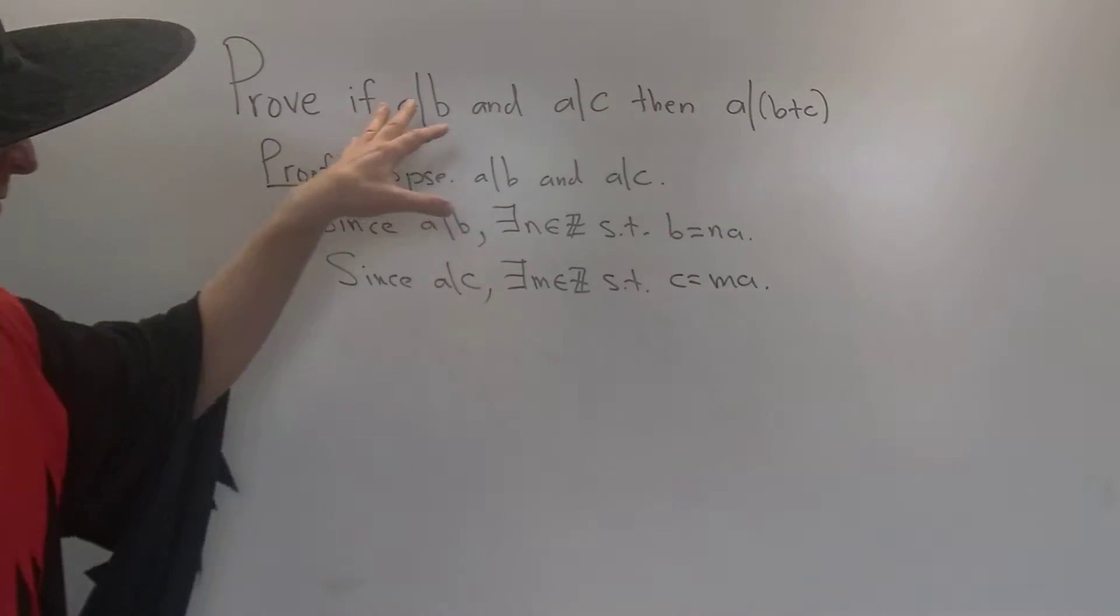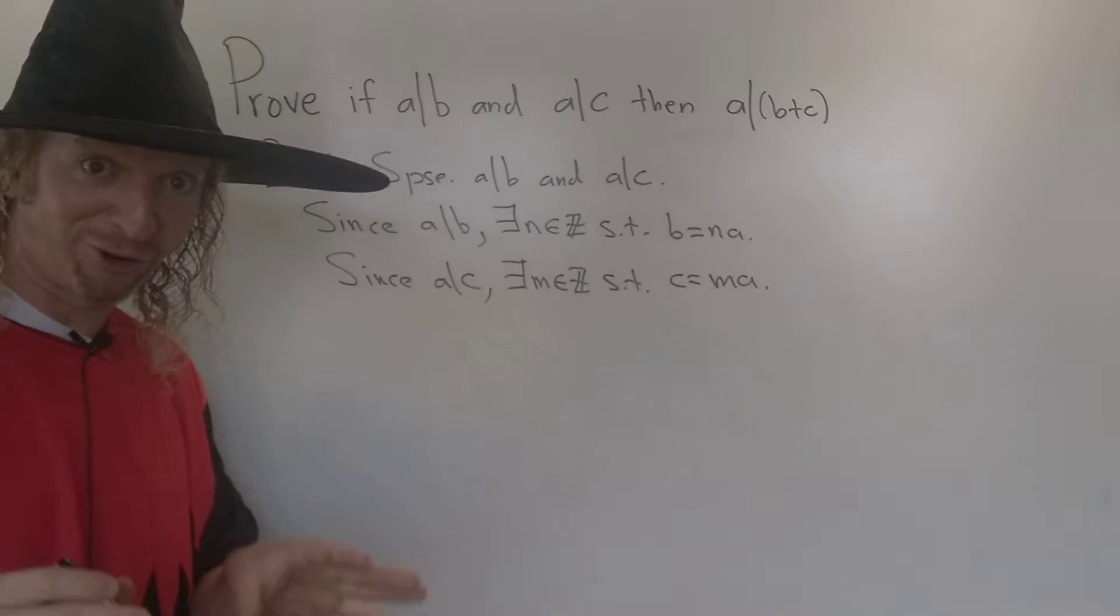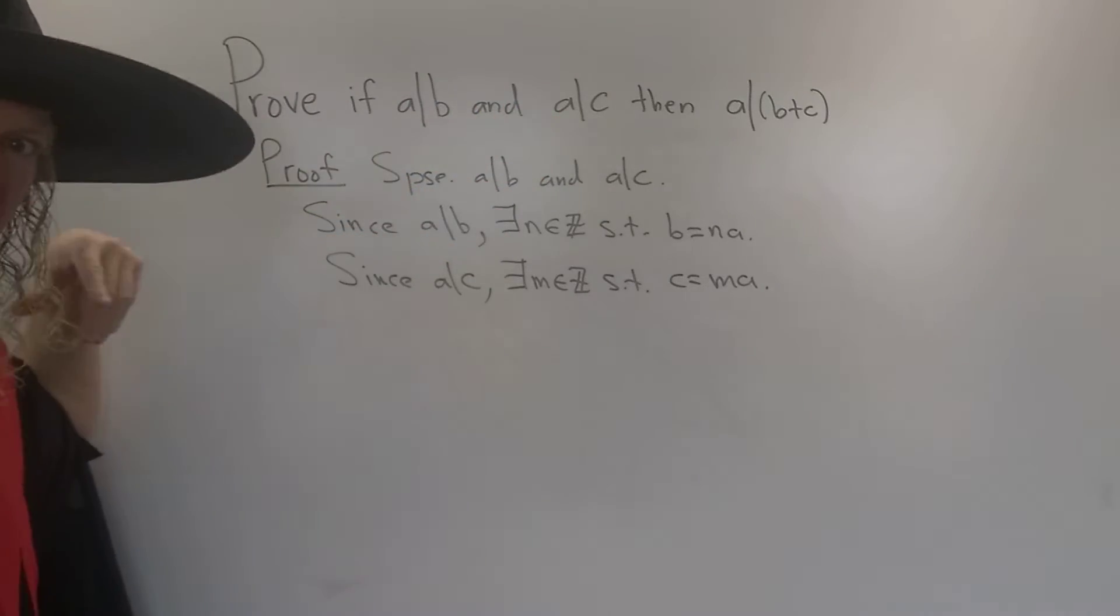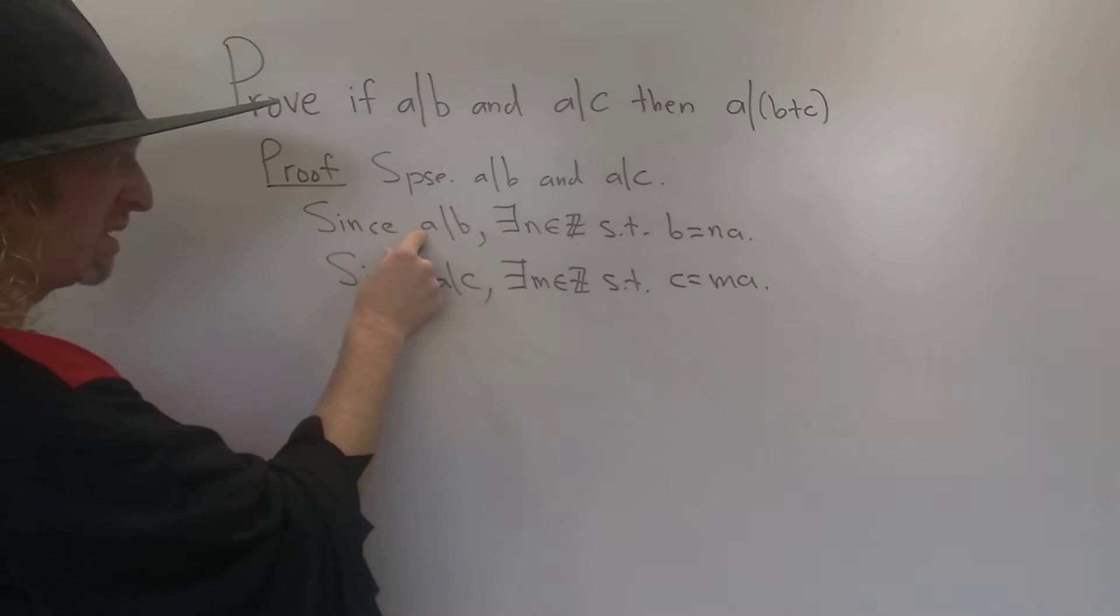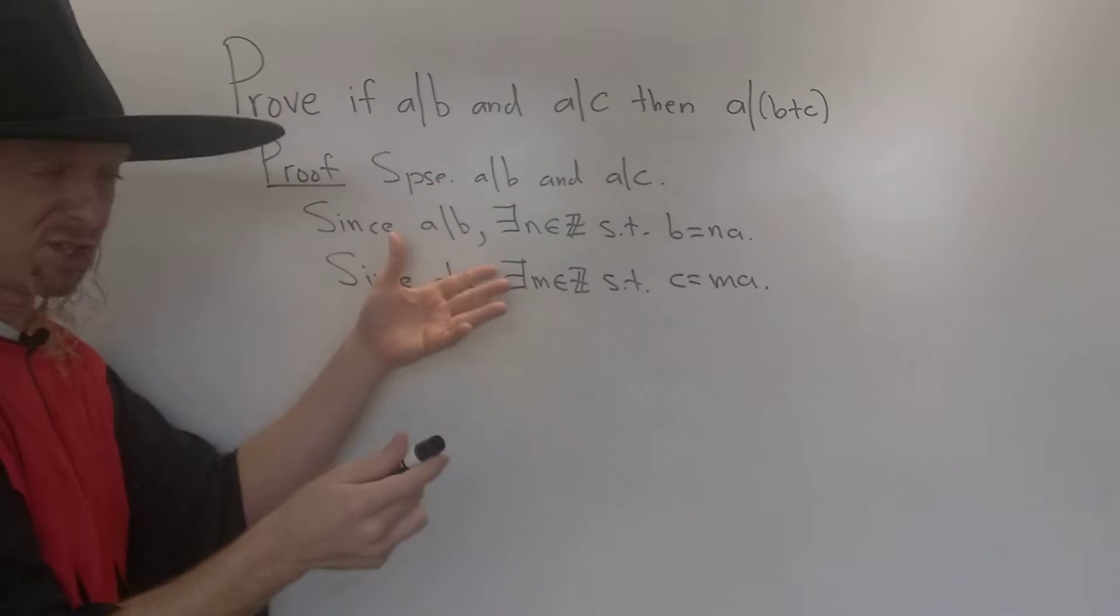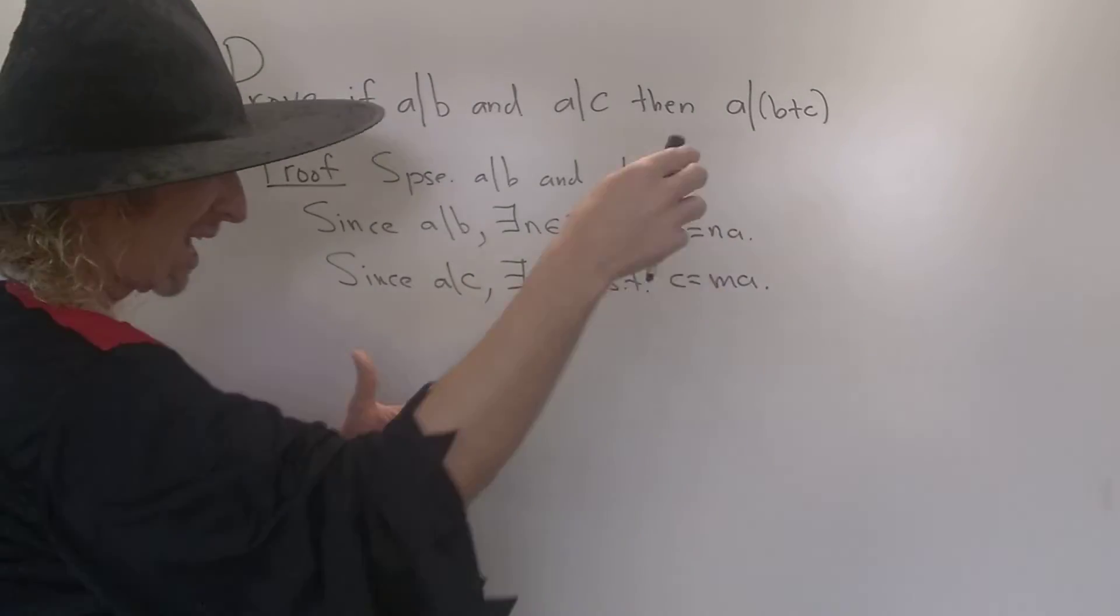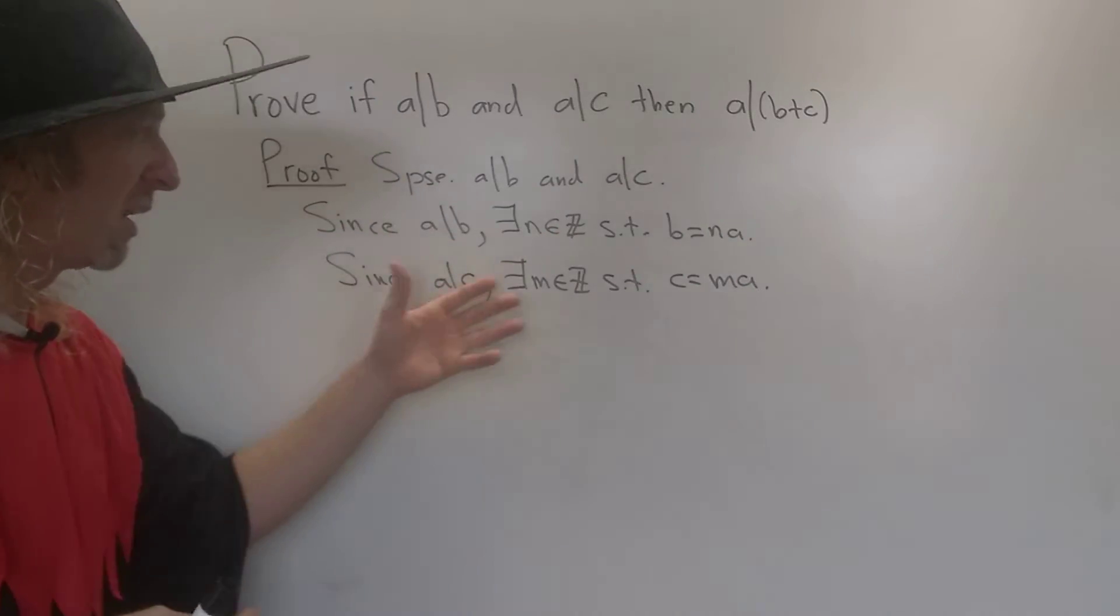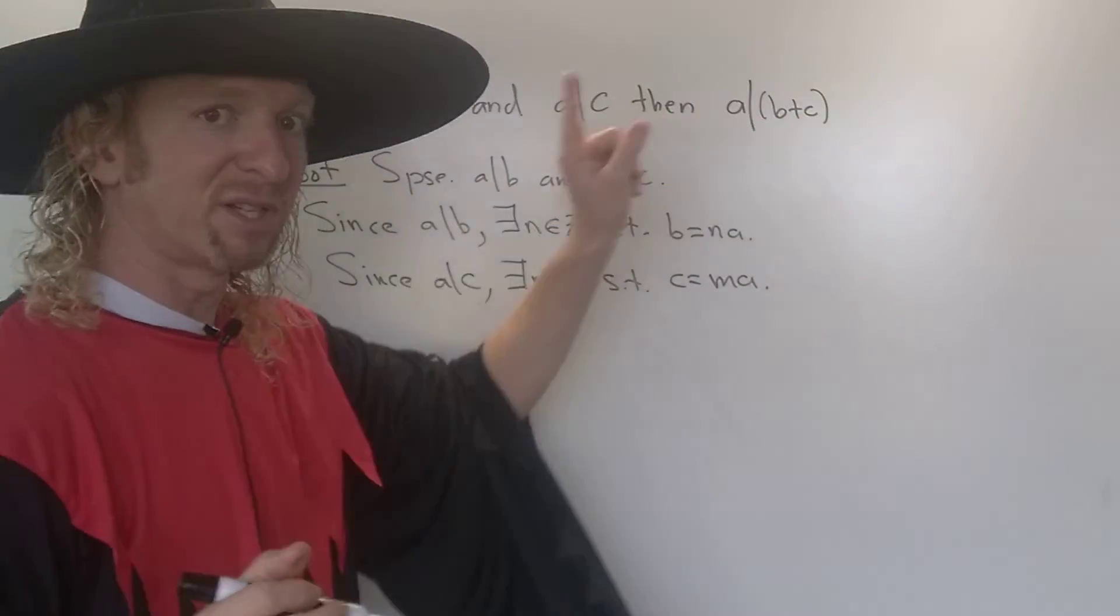So again, we're trying to prove that if this is true, then this is true. The structure of the proof works as follows. We assume this is true, and then I reiterated it again just for added clarity. So since A divides B, by definition of division, this means that there exists an integer N such that B is equal to N times A. So B is a multiple of A. Likewise, A divides C means C is a multiple of A. We have to show that A divides B plus C.